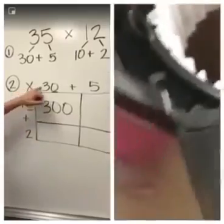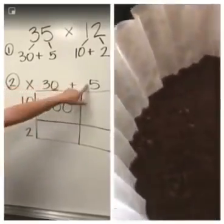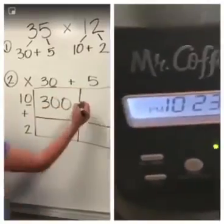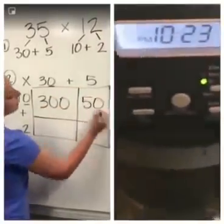We did 10 times this, 10 times that. 10 times 5 is 50, so it goes in the first box.